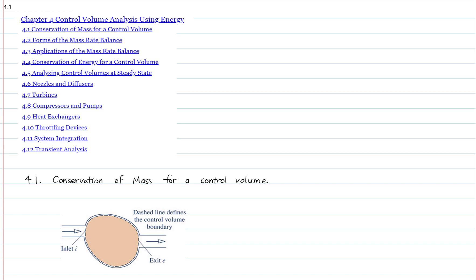Chapter 4 Control Volume Analysis Using Energy. So far we have considered closed systems. Mass was not allowed to cross the system boundary. In this chapter, we are going to consider open systems or control volumes. It allows mass to cross the system boundary. The fluid flow goes in and out of the system. We are going to introduce the mass balance and the first law of thermodynamics or energy balance on the open systems.